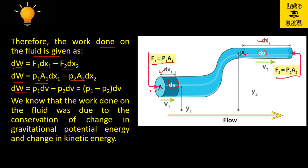Looking at the term A1·dx1 — A1 is the cross-sectional area and dx1 is the width of the water column, so A1·dx1 is simply the volume dV. Similarly, A2·dx2 is also the volume dV, since we are talking about constant volume. Taking dV as common, the remaining term is P1 − P2, so: dW = (P1 − P2)·dV.